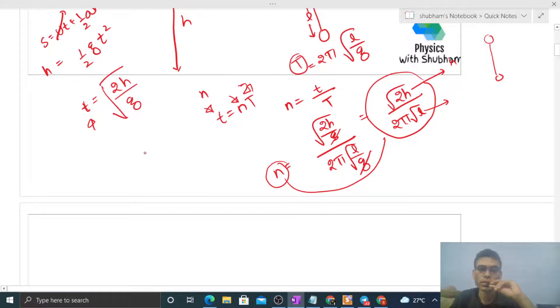It means clock mein jo time hoga that will also be same, kyu? Because jo time dikhayega clock woh depend karega number of oscillation pe. Let's say jo pendulum hai jo ek oscillation karta hai us time pe jo clock mein time hoga that is 2 second, means per oscillation jo clock hai woh 2 second time dikhata hai. So n number of oscillation ke baad kitna time dikhayega clock? 2n second. So that will be same on the surface of moon as well as on the surface of earth.